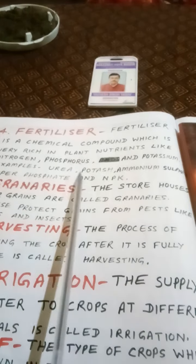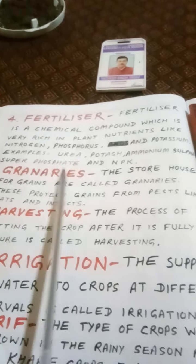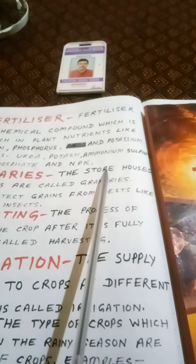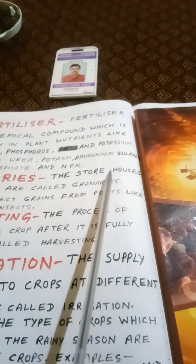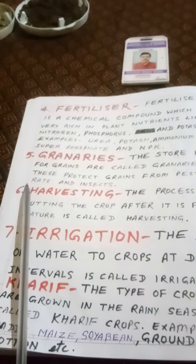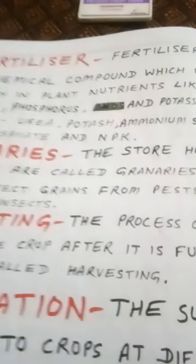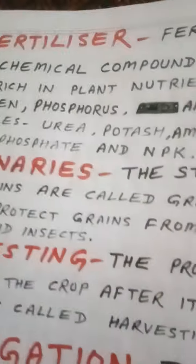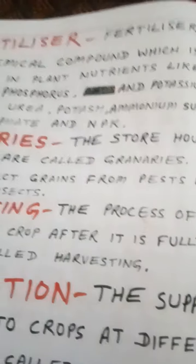Next keyword: Fertilizers. A fertilizer is a chemical compound which is very rich in plant nutrients like nitrogen, phosphorus, and potassium. Examples include urea, potassium, ammonium sulfate, superphosphate, and NPK — where NPK stands for nitrogen, phosphorus, and potassium.